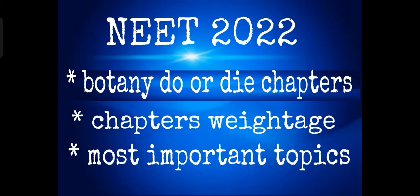Animal and human physiology — all topics, specifically diagrams, are very important. Reproduction: gametogenesis in plants, gametogenesis in humans, reproductive structures in plants and animals, polyembryony, parthenocarpy, apomixis, and menstrual cycle.